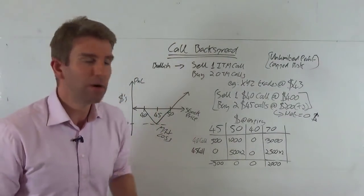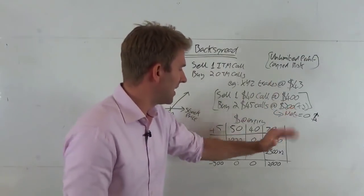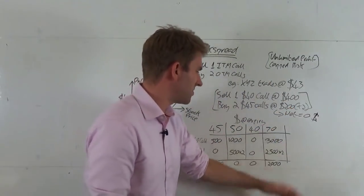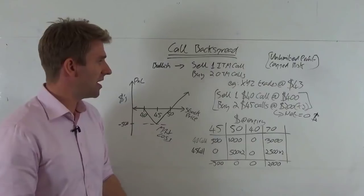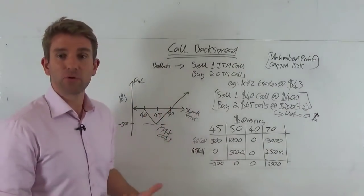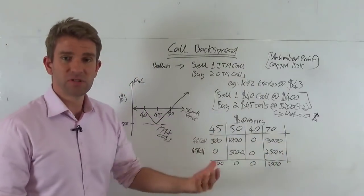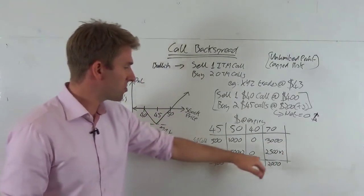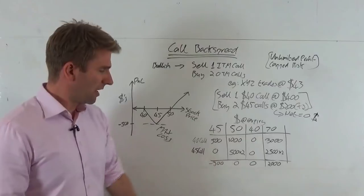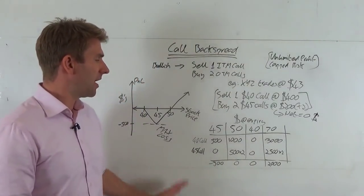The good stuff is where we want to make the money is what happens above that. Let's have a look and let's go to example of 70. So if we're at $70 a share, these are both going to have a good intrinsic value. The 40 call is going to have $3,000 worth of value because it's 30 bucks. The 45 call is going to have two and a half thousand because it's $25 value.